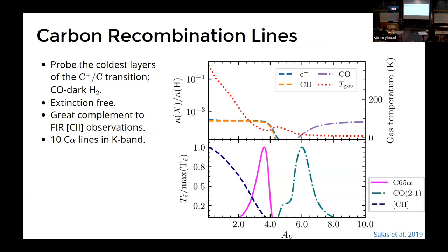So we use in turn then the weaker cousin of C+, that's carbon radio recombination lines.